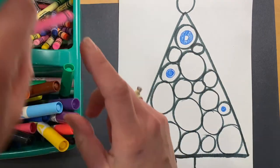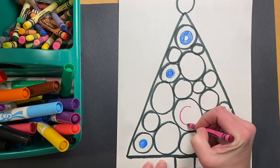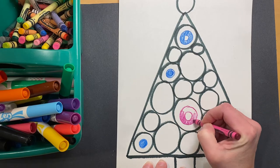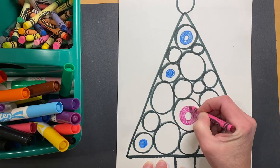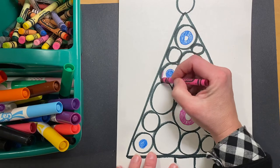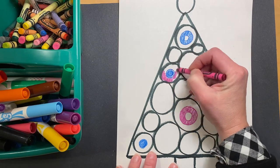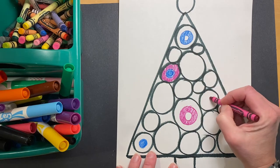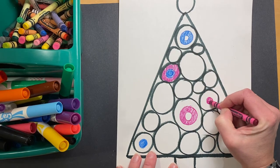And then when I'm ready to switch colors, I'll do that again. Watch how I color around the blue circle. Remember, you don't have to use the same colors as Mrs. Pulliam. You get to decide.